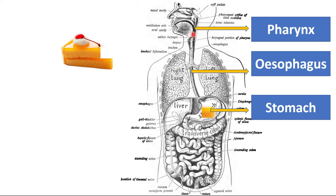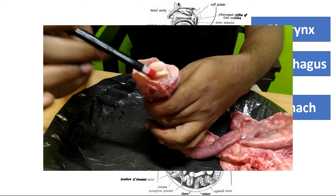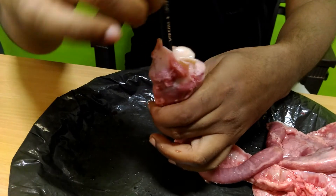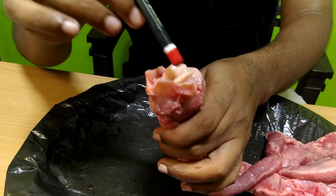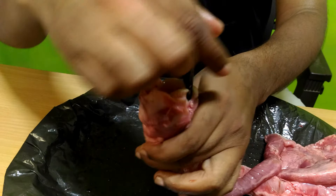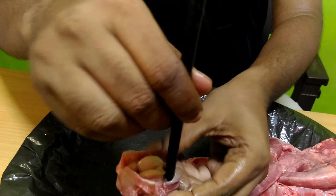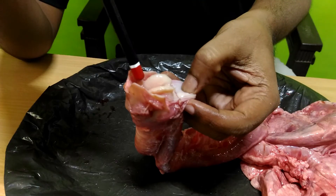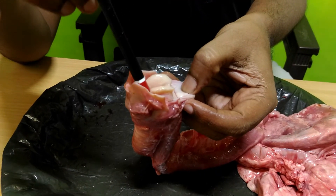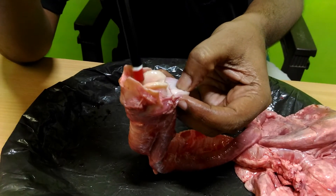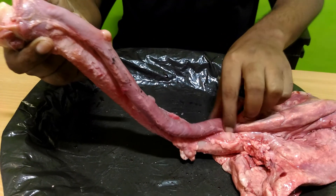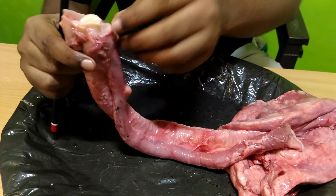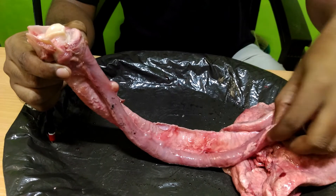Before we proceed to the topic, let's discuss about the internal structure of the pharynx. This is the pharynx region. Here you can find the windpipe, and the windpipe is protected by the epiglottis. And here you can find the food pipe — this is the opening of the esophagus. When we swallow, the epiglottis will close the windpipe so that food will not enter inside the windpipe. Instead, it will go inside the food pipe — the esophagus — which starts from the pharynx and ends in the stomach.